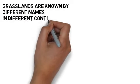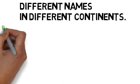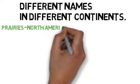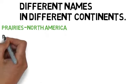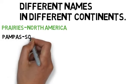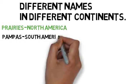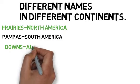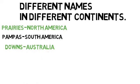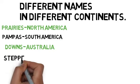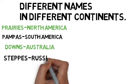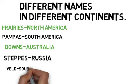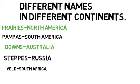Grasslands are known by different names in different continents. They are known by the name of prairies in North America, by the name of pampas in South America, downs in Australia, steppes in Russia, and veld in South Africa.